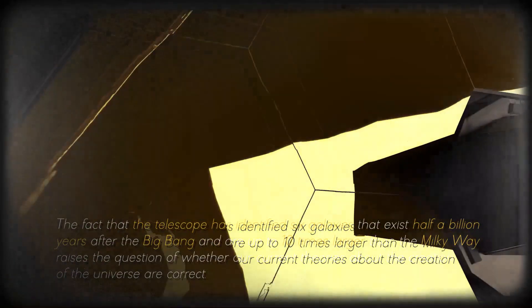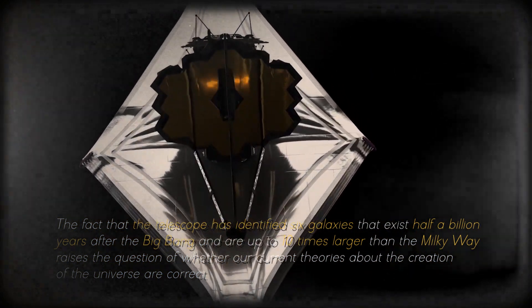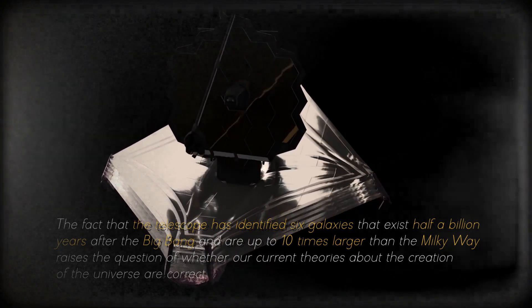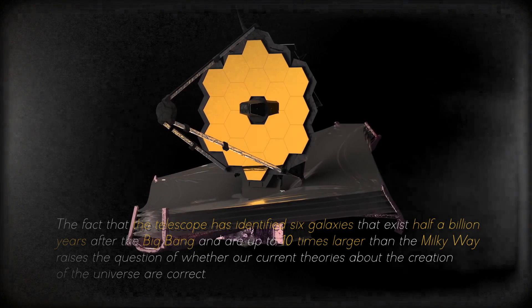The fact that the telescope has identified six galaxies that exist half a billion years after the Big Bang and are up to ten times larger than the Milky Way raises the question of whether our current theories about the creation of the universe are correct. Kaku explained that it takes billions of years to create a galaxy like the Milky Way, so it is strange to find such large, young, primordial galaxies.